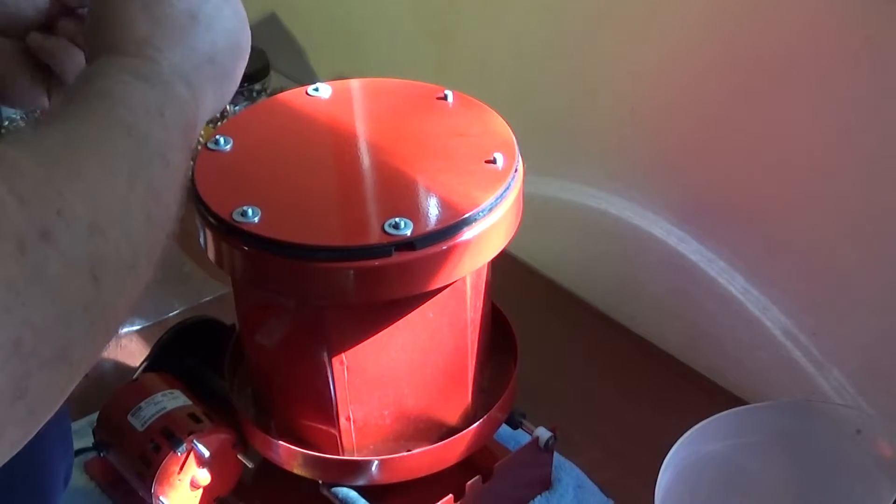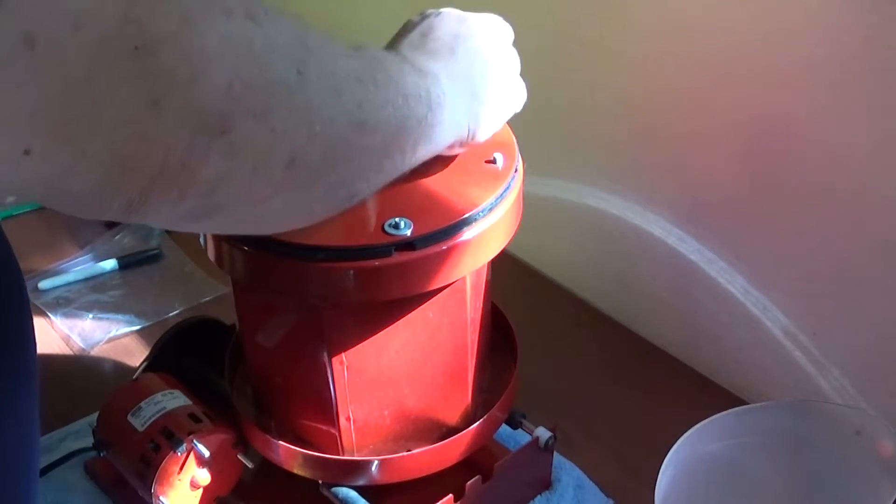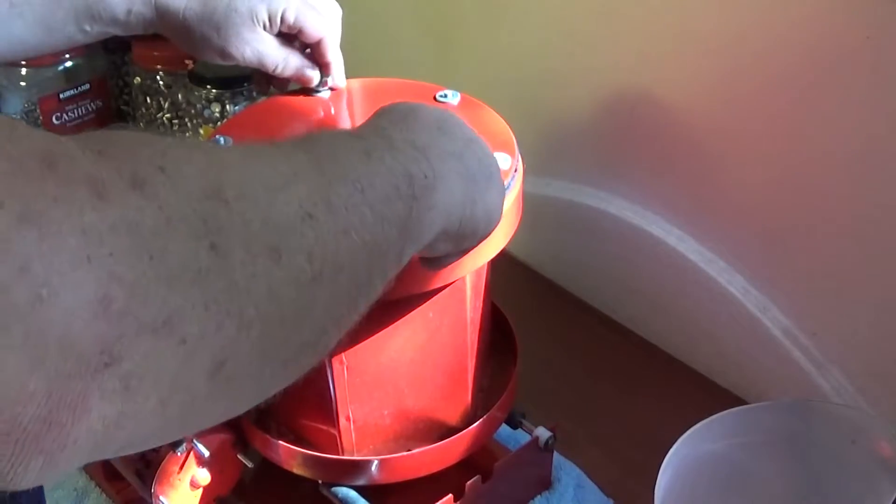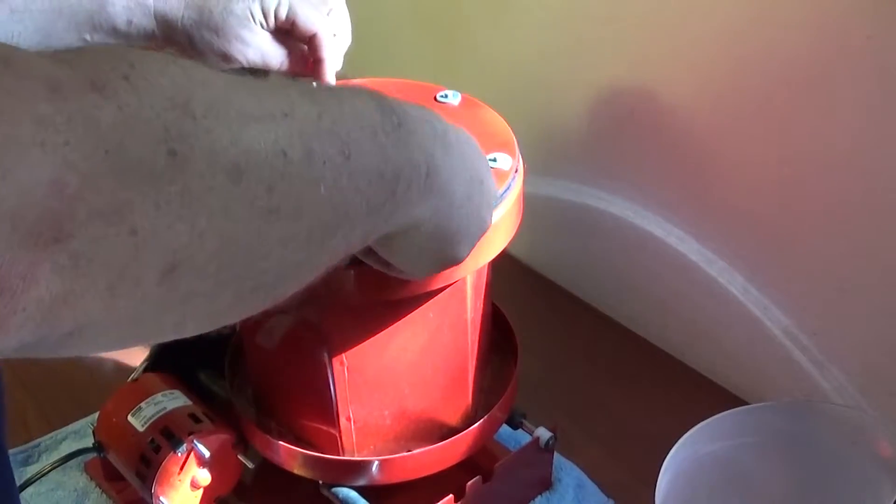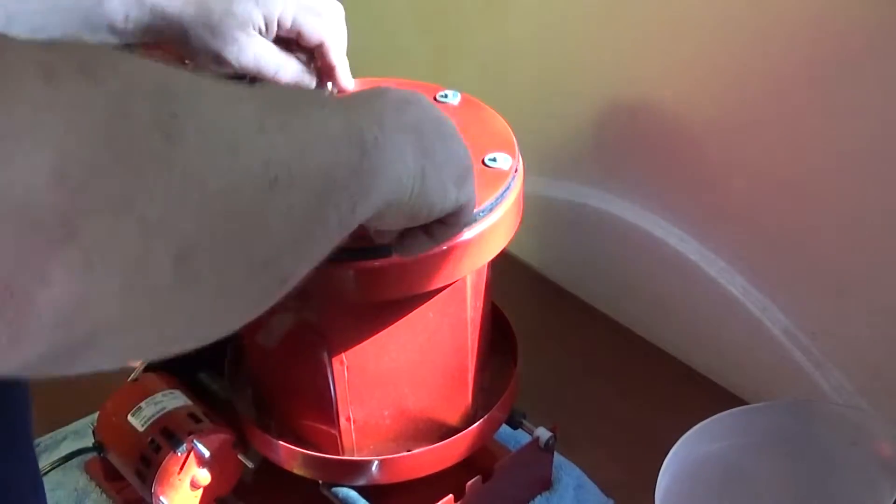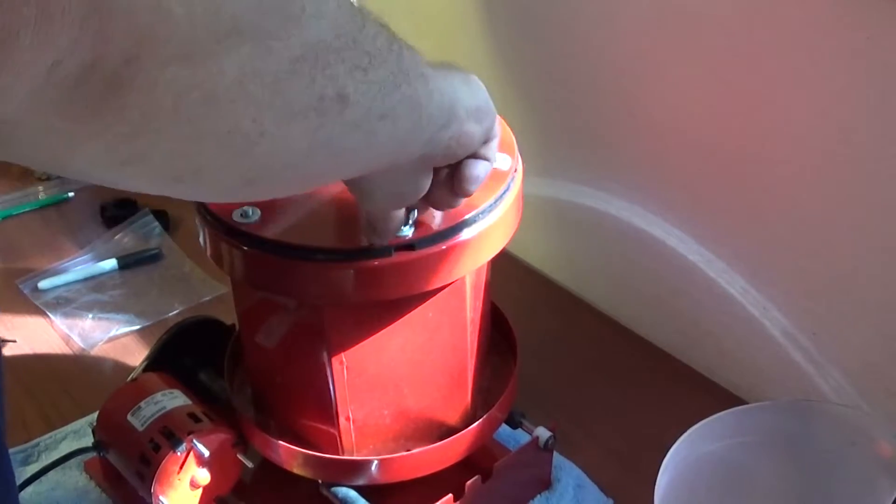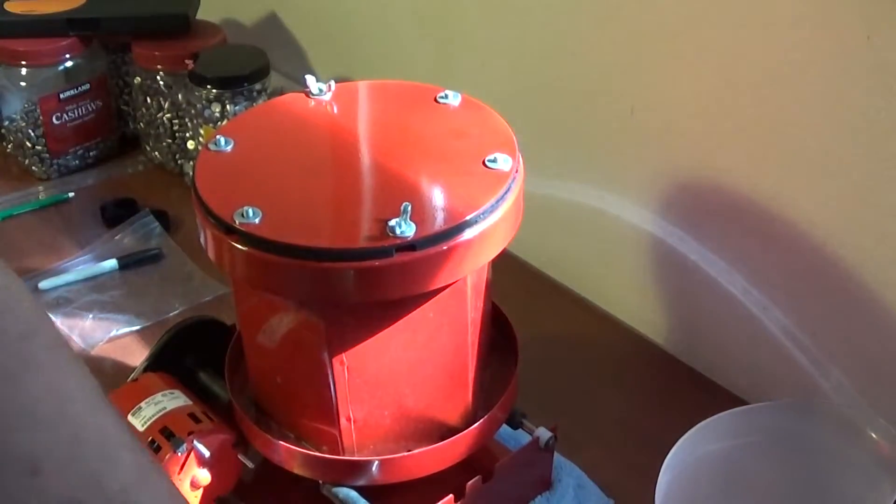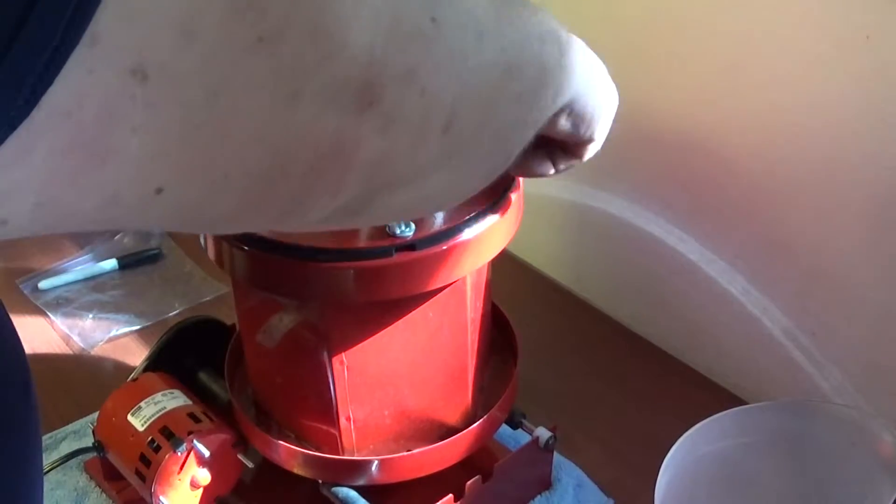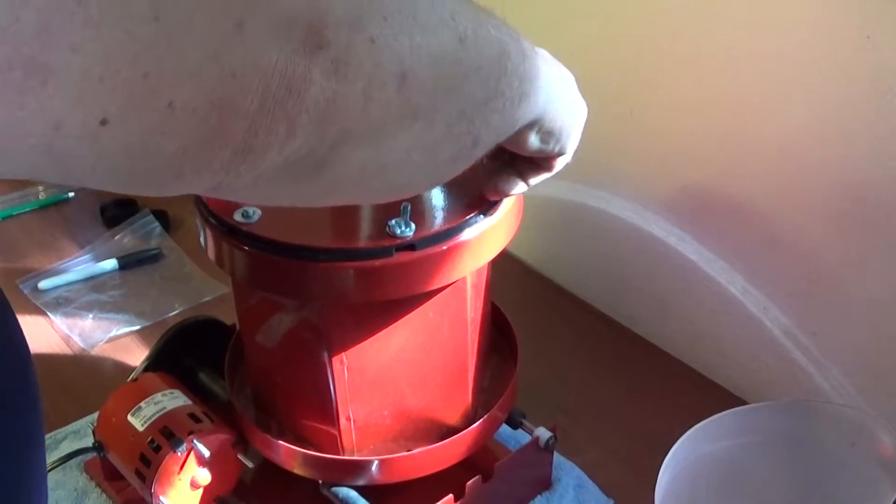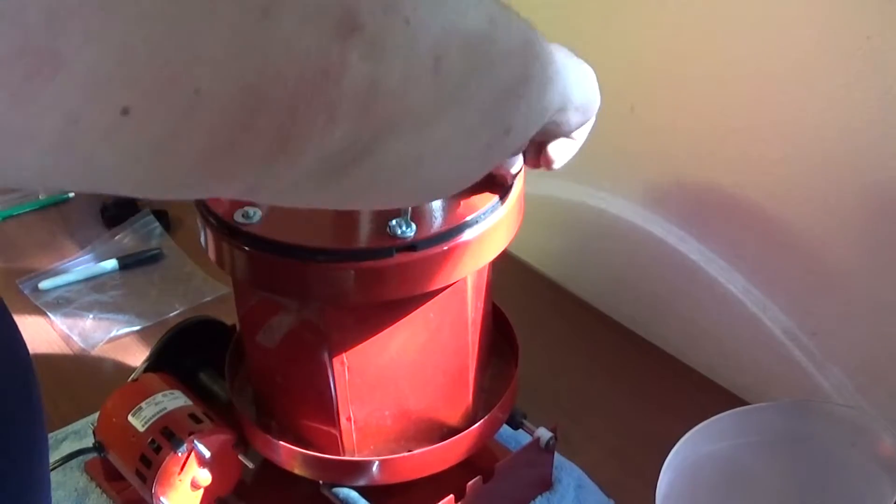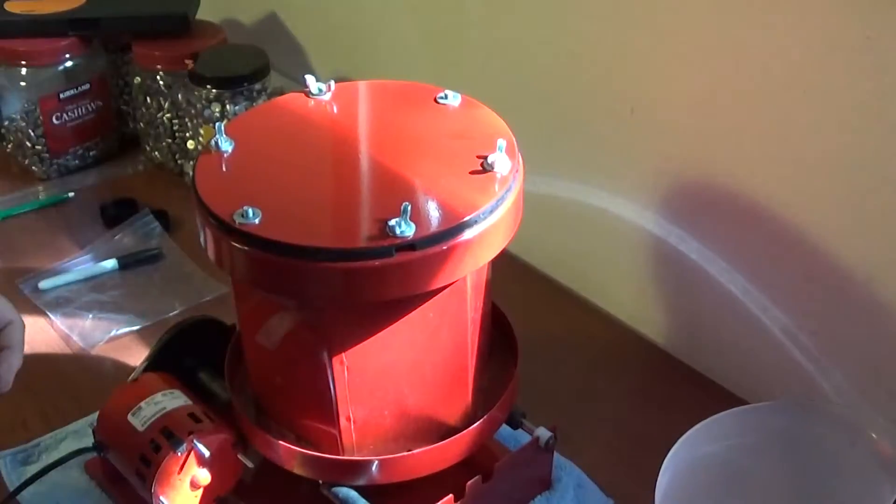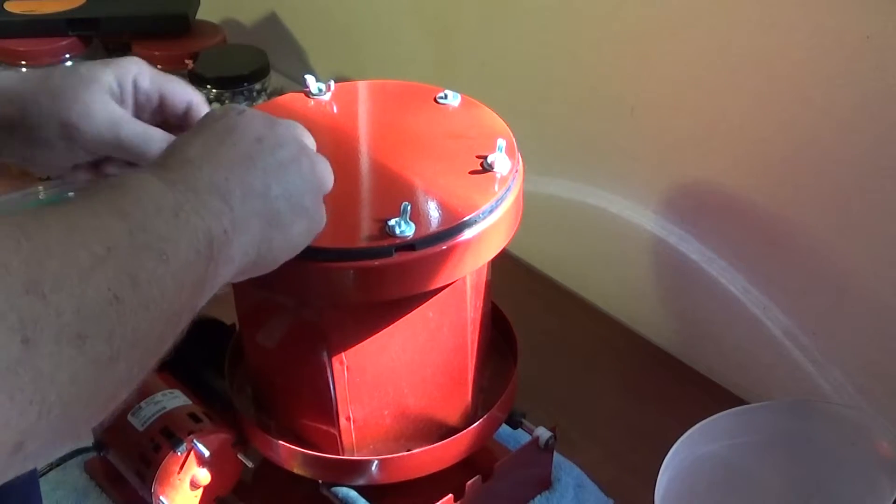It also takes that whole dusty environment away from us for back in the day when we used to use dry tumbling. Now, I still have a Lyman dry tumbler vibratory tumbler. It's out in the garage and I still use it too for cleaning pistol brass and that sort of thing that I'm not going to deprime. I'm just going to throw them through my Dillon press.